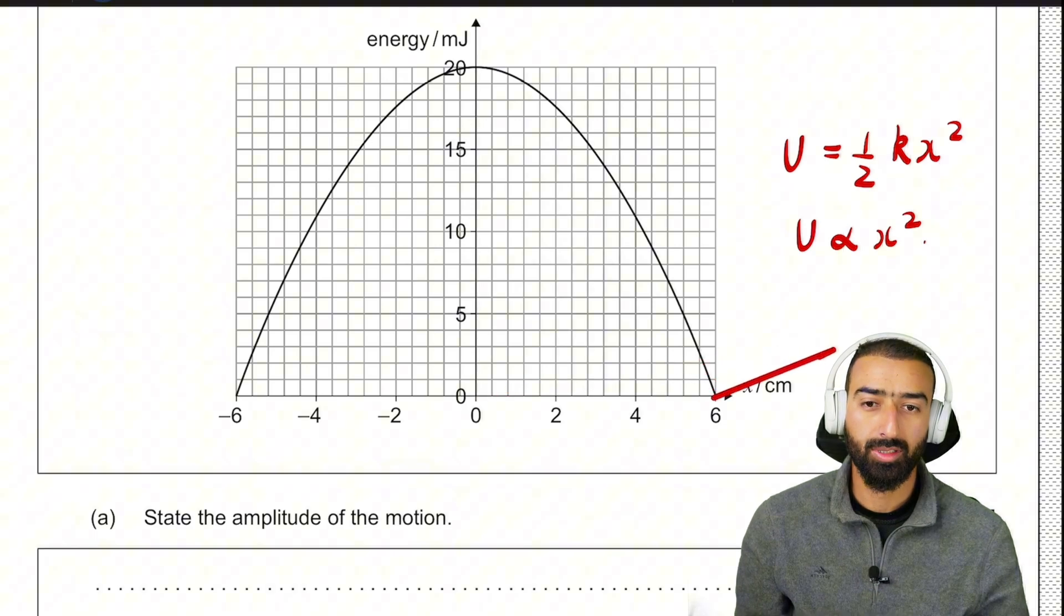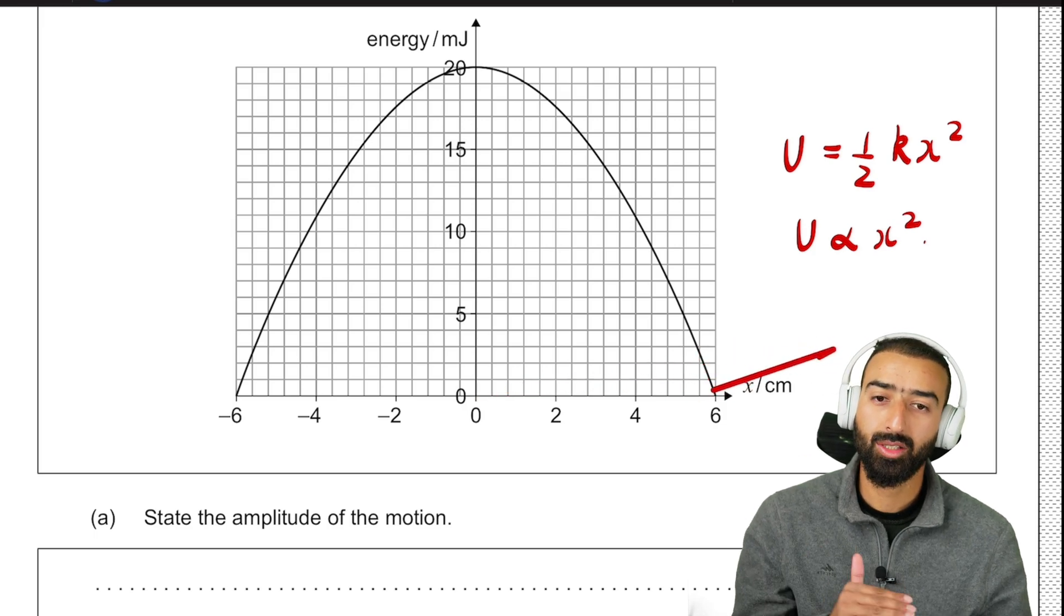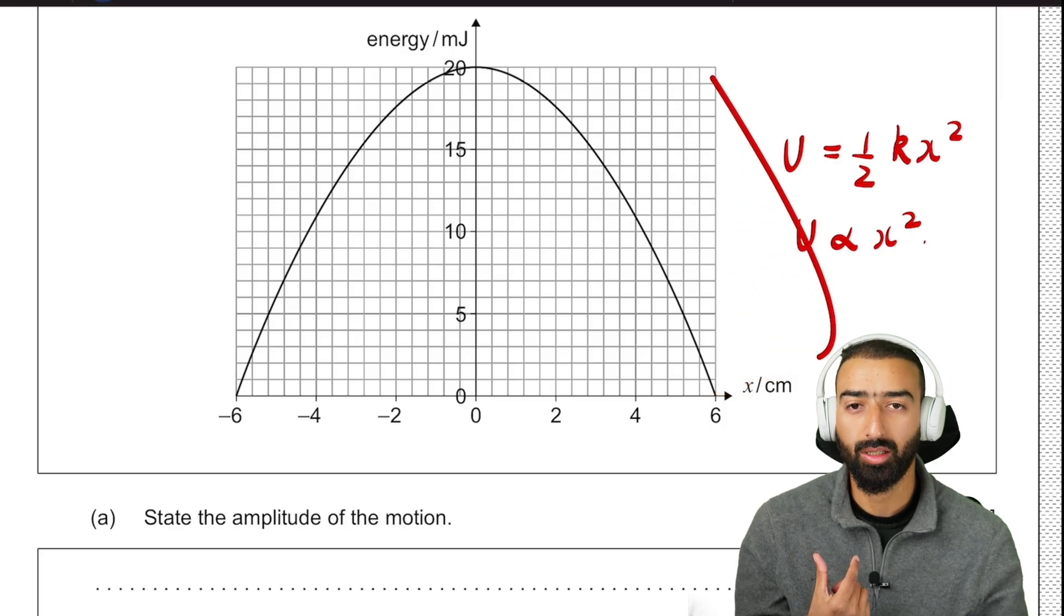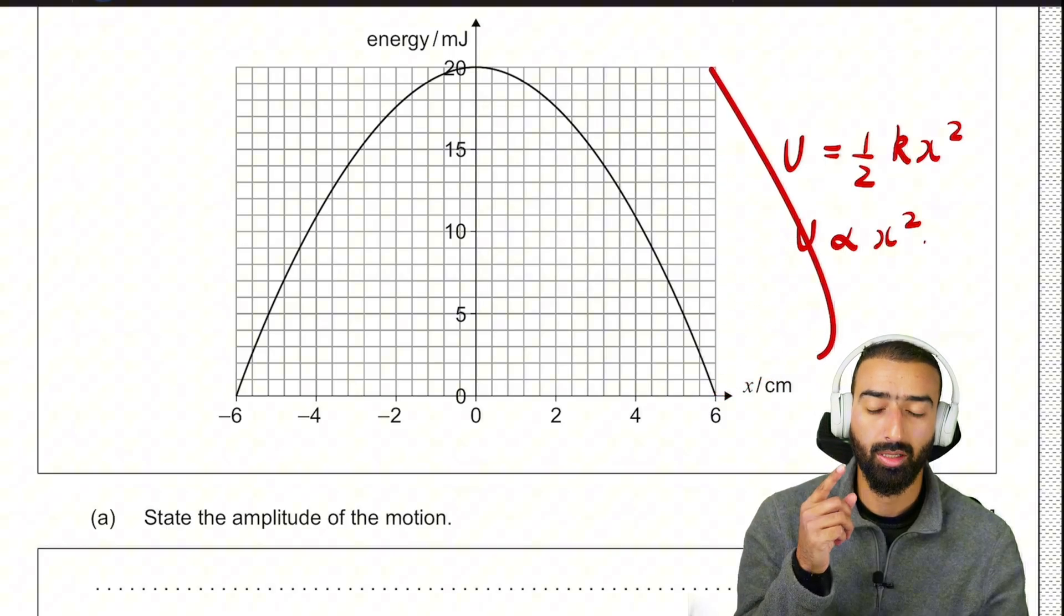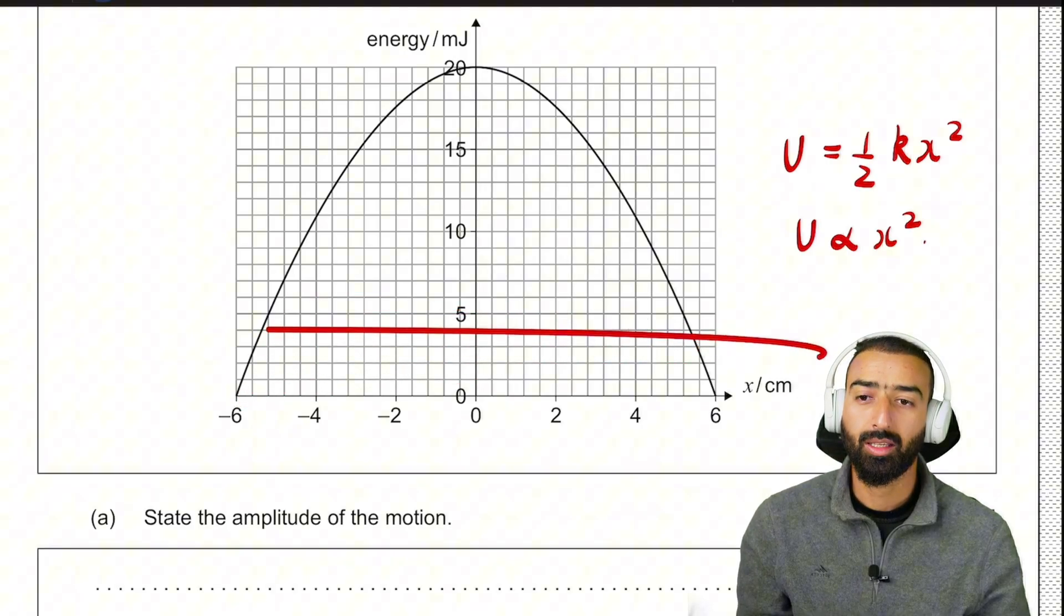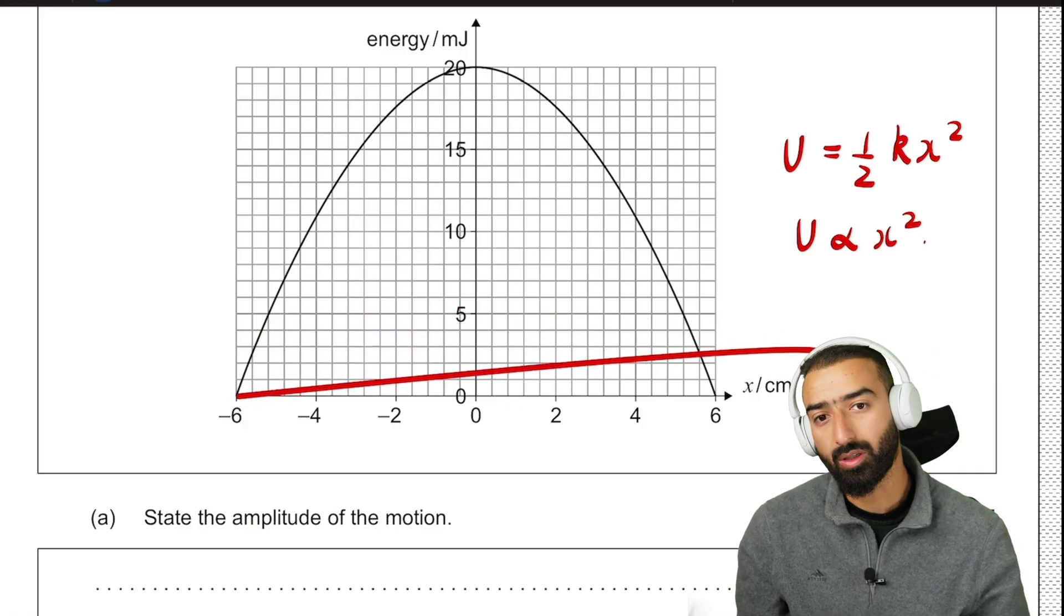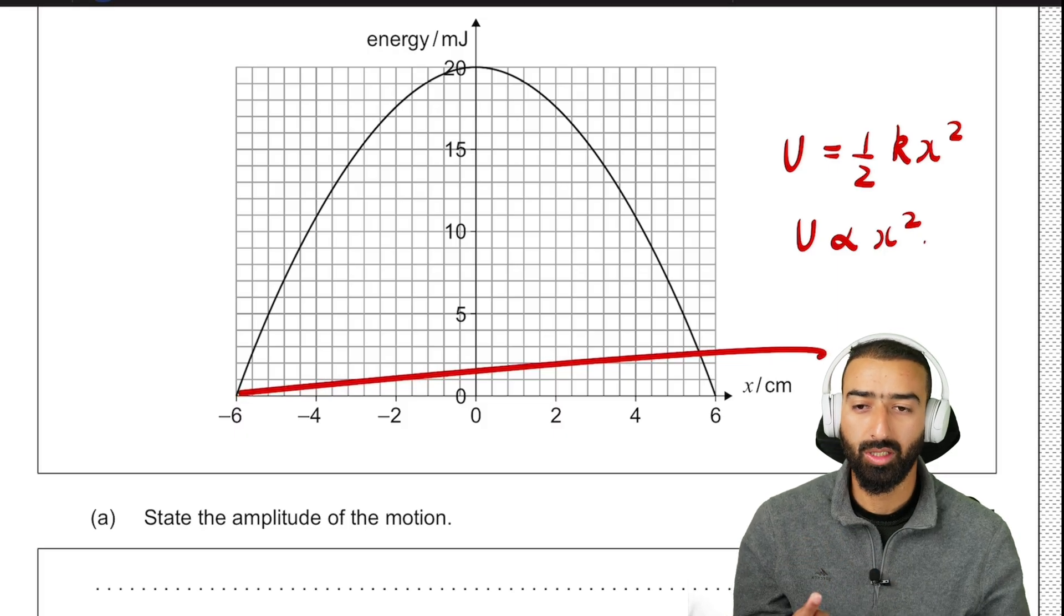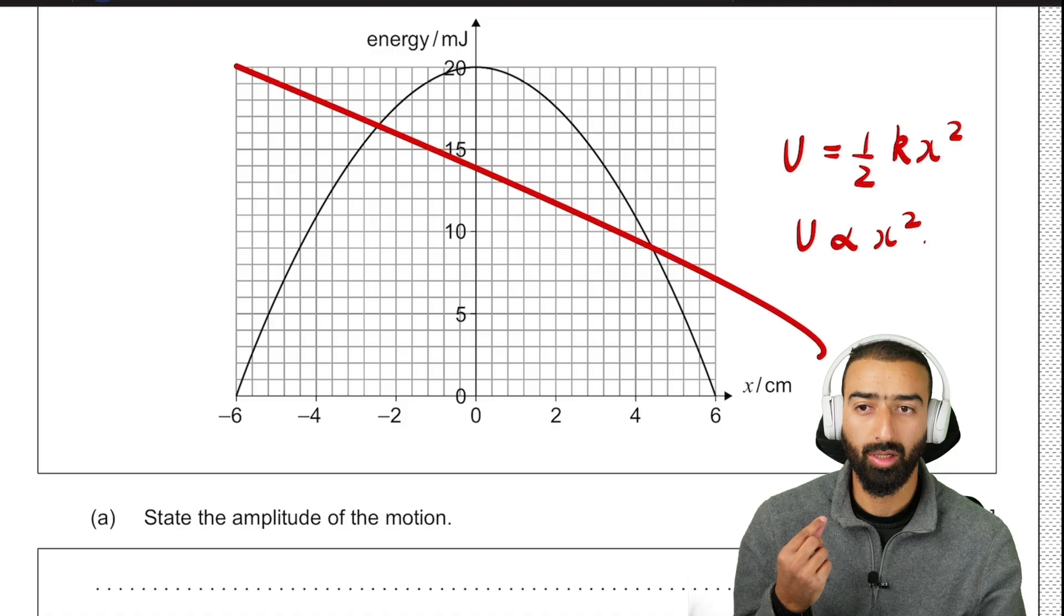Furthermore, when x equals 6, the kinetic energy is 0. So all the energy must have been converted to potential energy. So we have a point over here. In a similar fashion, when x equals minus 6, the kinetic energy graph drops to 0. That means all the energy must have been converted to potential energy. Therefore, we have a point right over here.